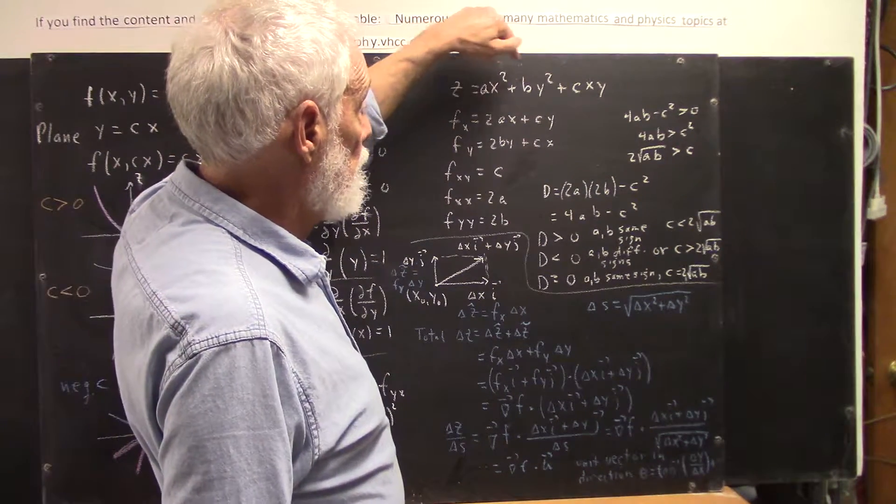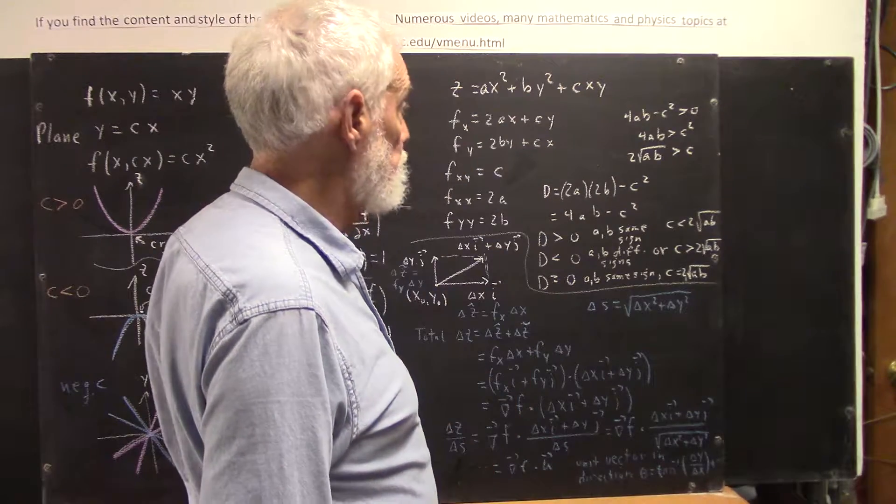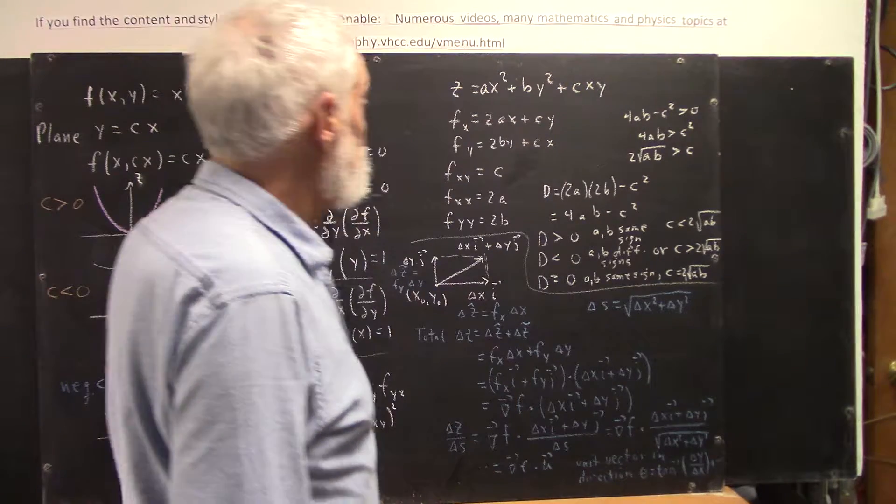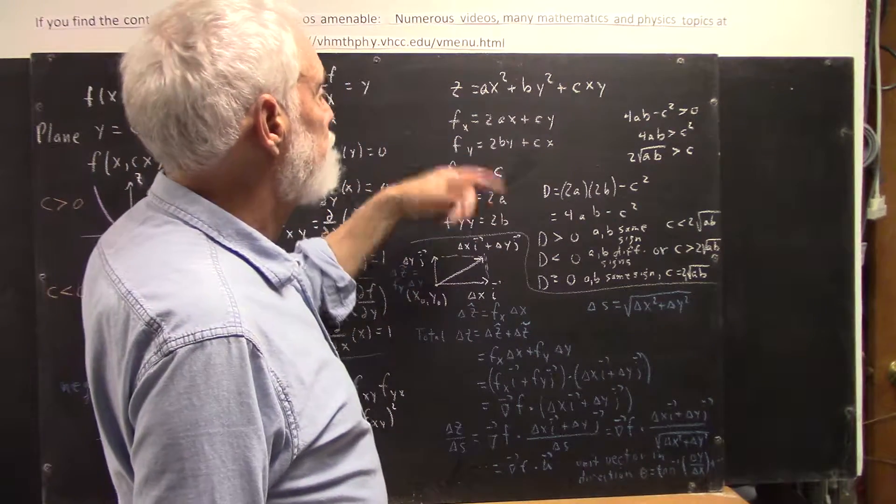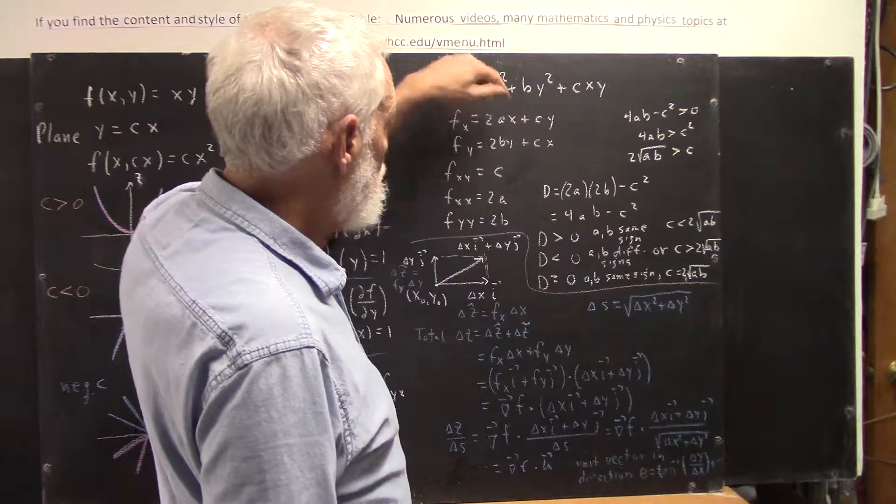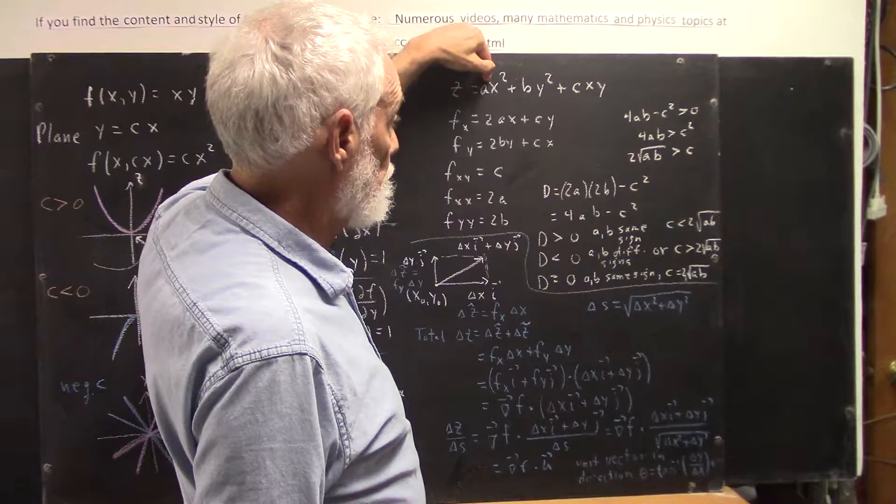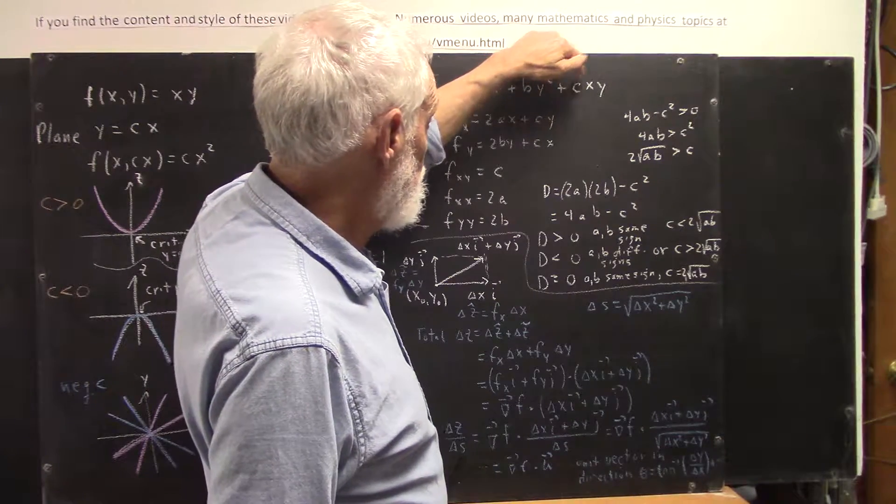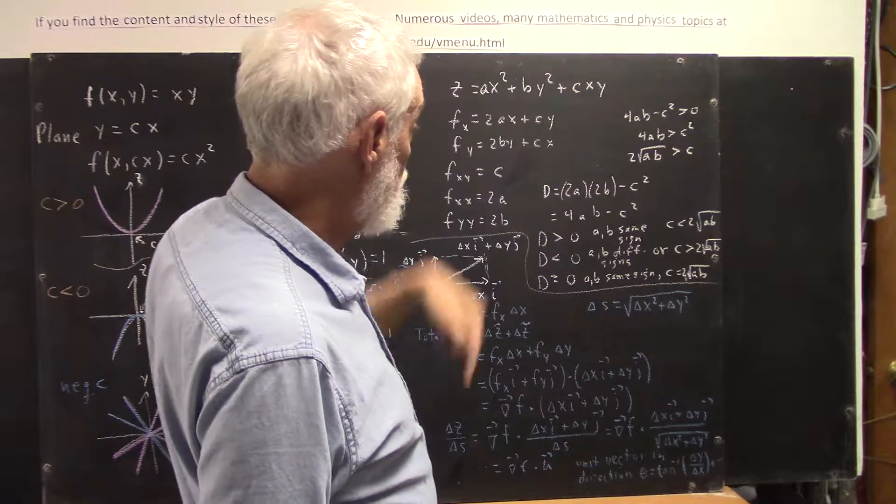So let's consider z equals ax squared plus by squared plus cxy. The x-derivative, I don't have to read it to you, let the y be constant. You're going to get 2ax from this, you're going to get cy from this, taking the x-derivative.